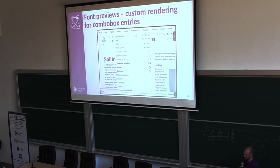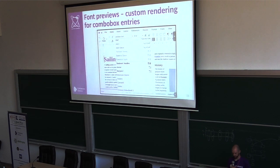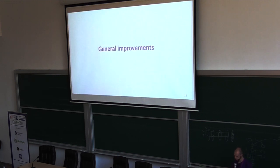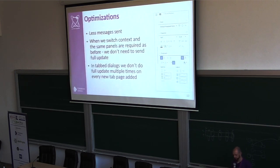Another new feature is custom rendering support for combo box entries. We use that for example for font preview or style preview in the sidebar, so now we can see the rendered fonts in Colabora Online, not only the font name.